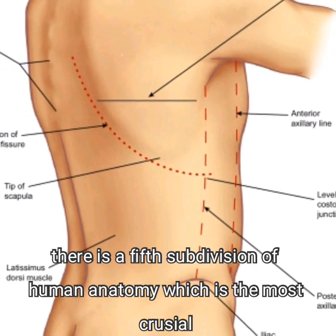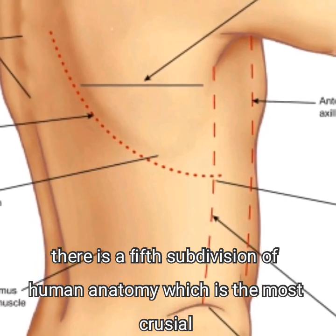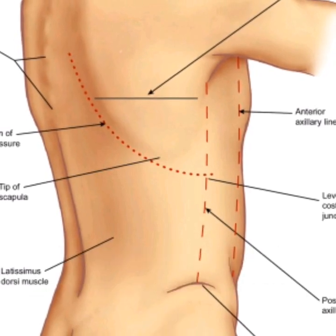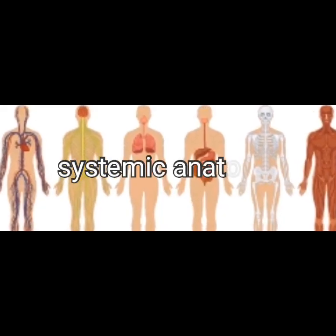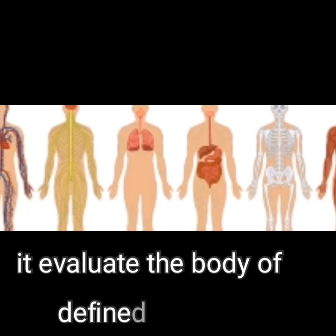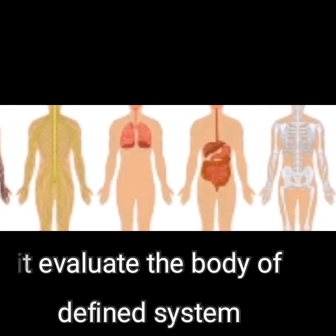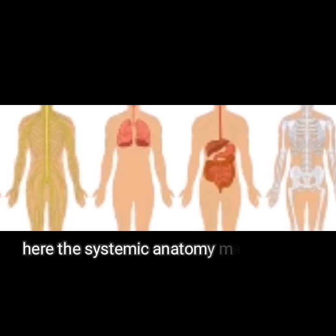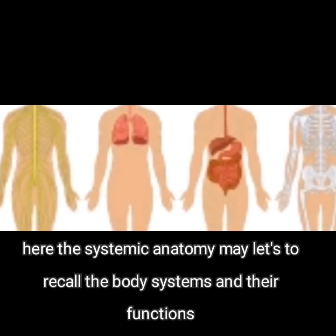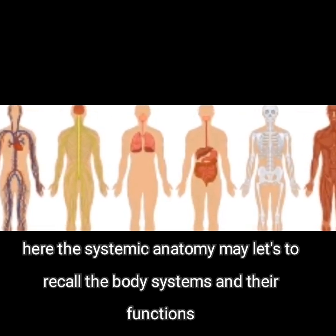There is a fifth subdivision of human anatomy which is most crucial — systemic anatomy. It evaluates the body by a defined system. Systemic anatomy may help us recall body systems and their functions.